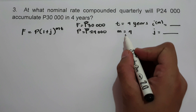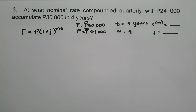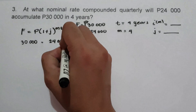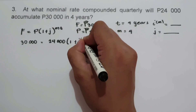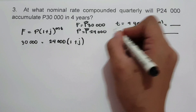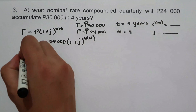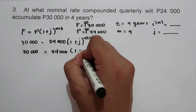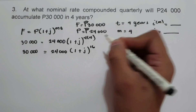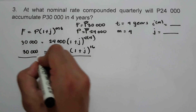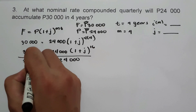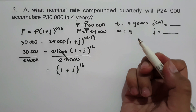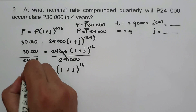Let us substitute the given values into the formula. F equals 30,000 equals principal 24,000 times the quantity of 1 plus J raised to M times T, that is 4 times 4. We write 30,000 equals 24,000 times the quantity of 1 plus J raised to 4 times 4, that is 16. Dividing the whole equation by 24,000, we get 1 plus J raised to 16 equals 30,000 divided by 24,000, that is 1.25.